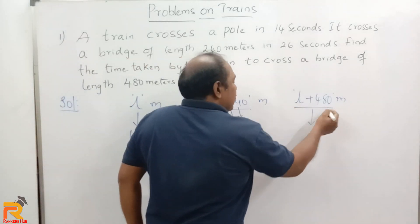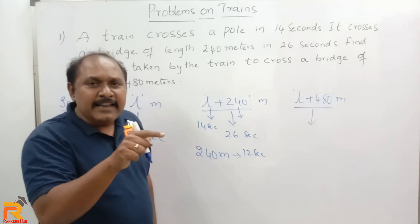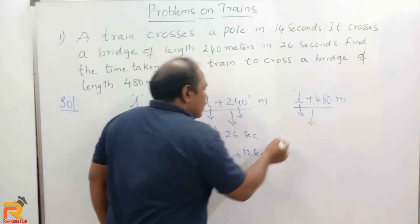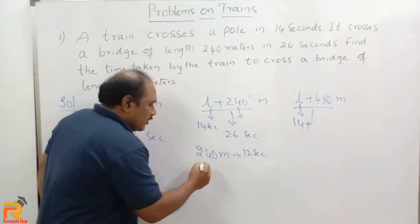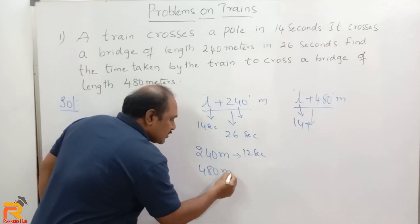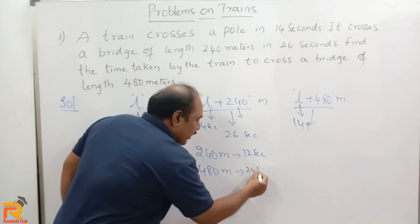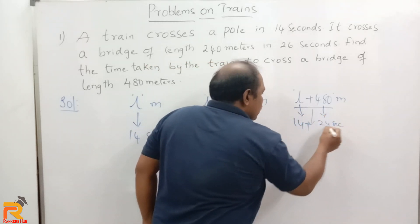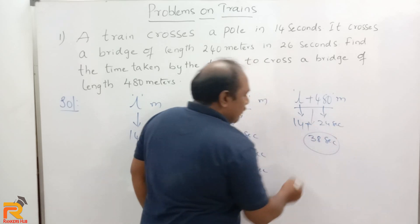The question is: how much time will the train take to cross a bridge of length 480 meters? That is, how much time to travel L plus 480 meters? To travel L meters, the train takes 14 seconds. To travel 480 meters — since 240 meters takes 12 seconds, and 480 is double 240 — it will take 24 seconds. So to travel L plus 480, the answer is 14 plus 24, which is 38 seconds.